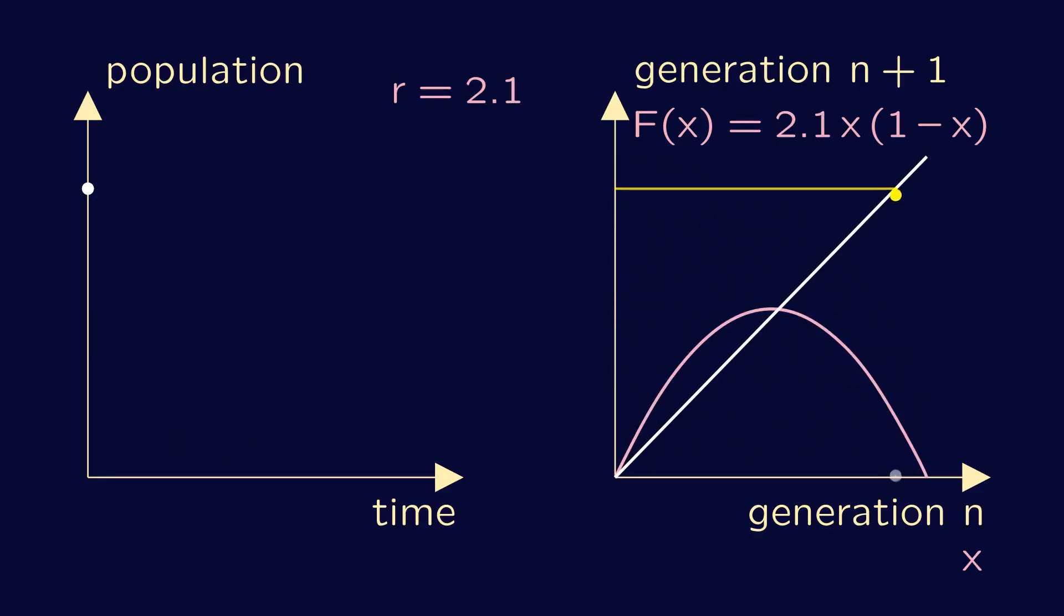If r is between one and three, then the population size converges to a non-zero value. The cobweb diagram in this case can jump about a little at the start, but eventually it also becomes a staircase, approaching the point where the diagonal intersects the plot of the logistic map.